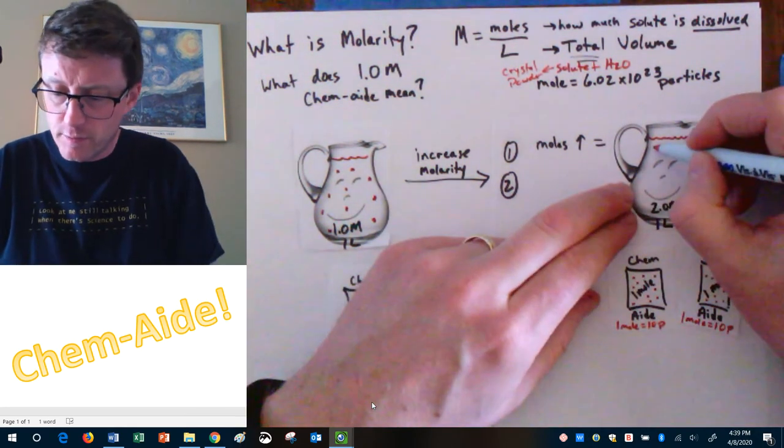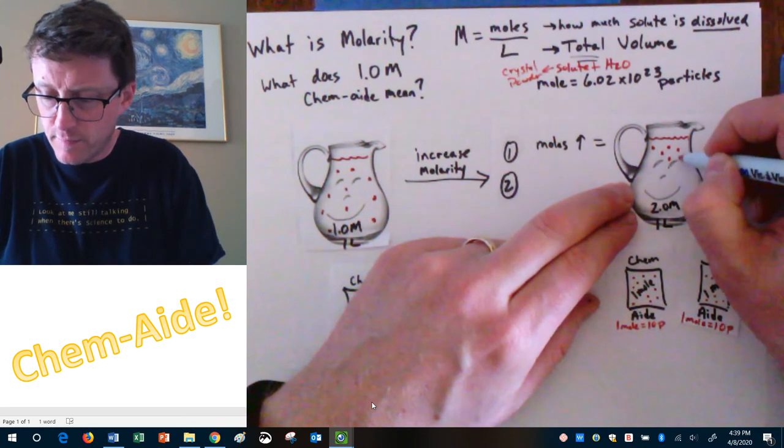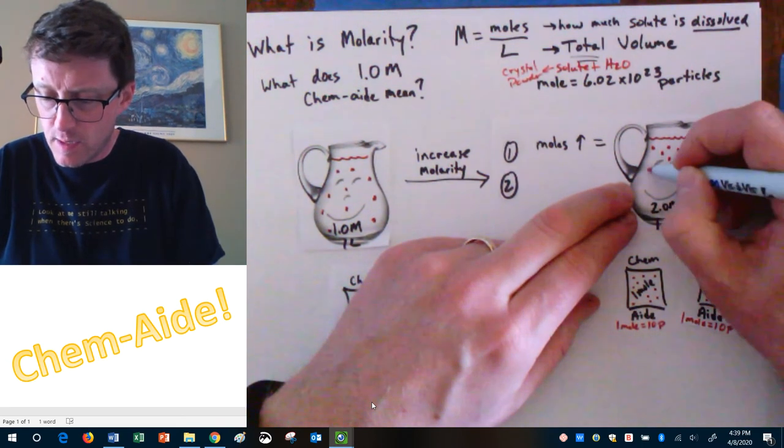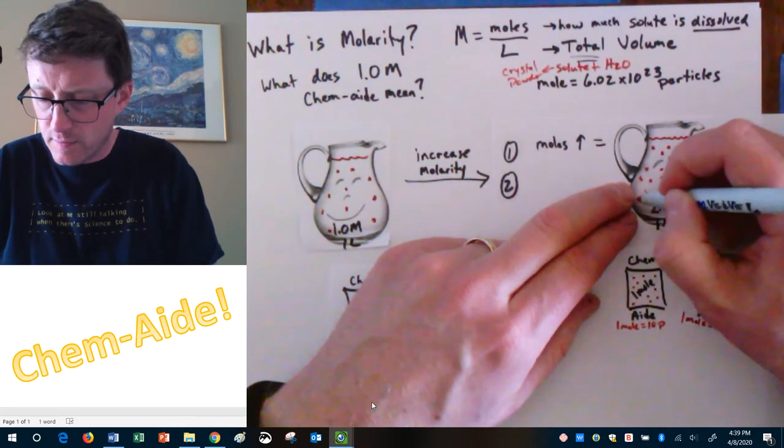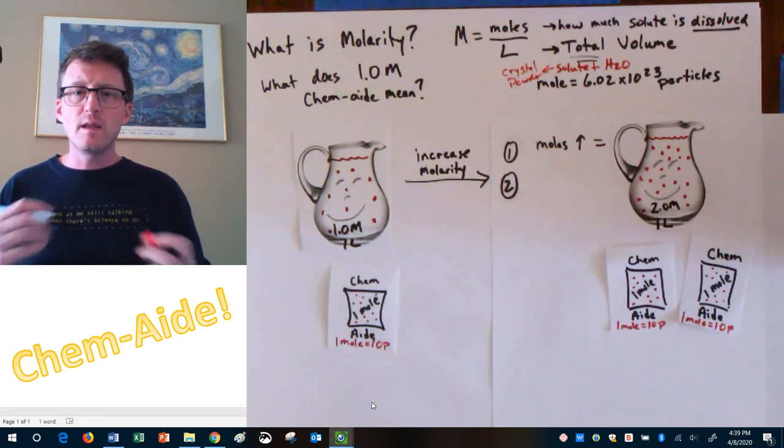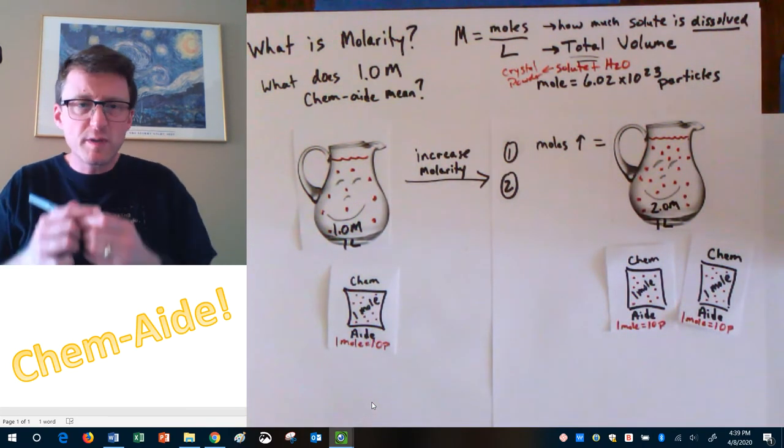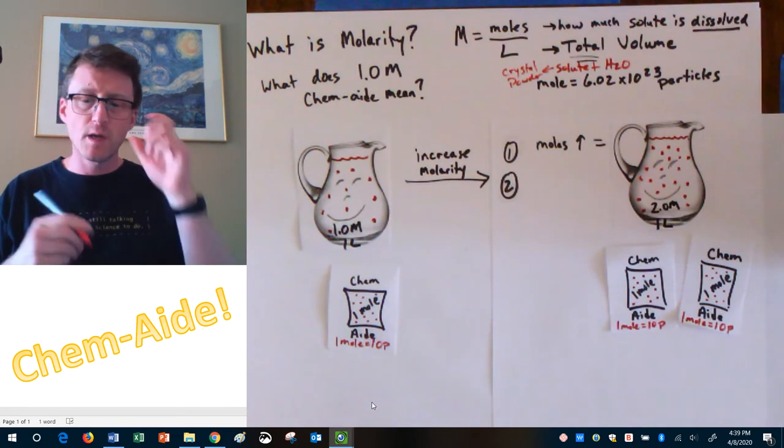So, I'm going to have to do 20. One, two, three, four, five, six, seven, eight, nine, 10, 11, 12, 13, 14, 15, 16, 17, 18, 19, and 20. Notice, they're a little bit more clustered together. There's more of them, more concentrated.